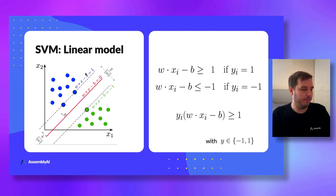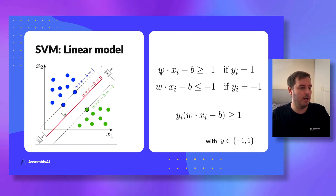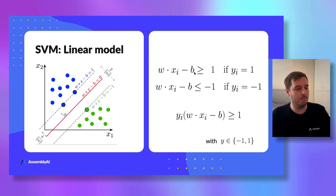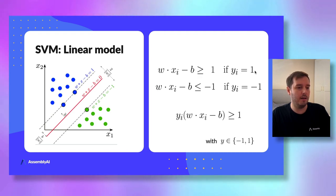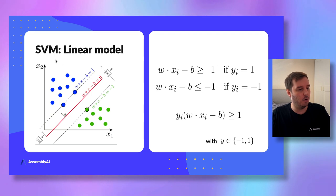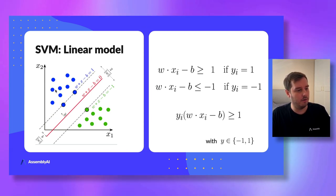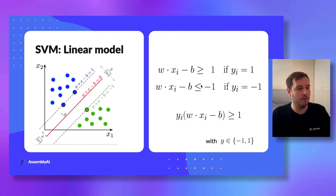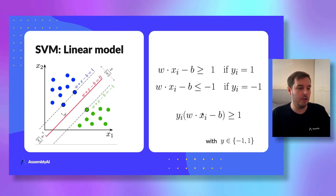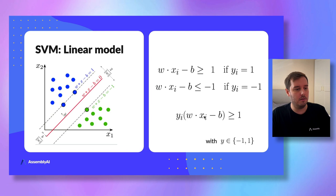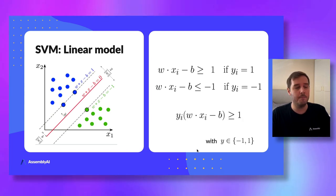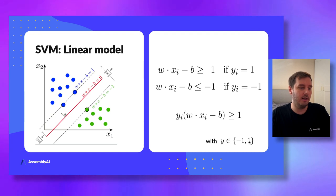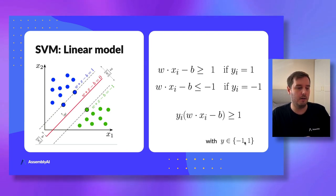We can express this as: w times x minus b should be greater than or equal to one for the positive class, and smaller than or equal to minus one for the negative class. Combining these into one equation by multiplying by the label, we get: y_i times (w times x minus b) should be greater than or equal to one. Note that labels should be minus one and plus one, not zero and one.